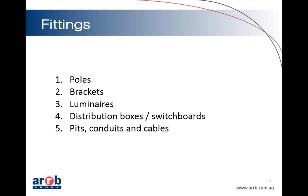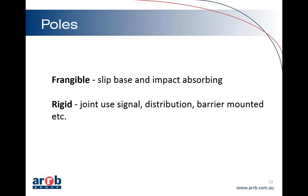Talking about some of the fittings that we use on a public lighting job: there's poles, brackets, luminaires, distribution boxes, and then all the underground stuff. If we were going to split poles into a couple of categories, you're most likely going to split them up and say there's frangible poles — that are impact absorbing — and then rigid poles. I've listed a couple of the types of rigid poles: joint use signal poles, power poles that you might mount lights on, and poles that are mounted on concrete barriers. Normally you try and use as many frangible poles as possible on a job. Sometimes you have to use rigid poles, or it's more beneficial to use a rigid pole if you can combine a public lighting pole and a traffic signal pole.